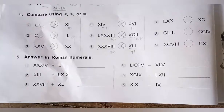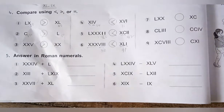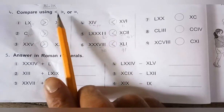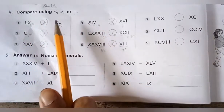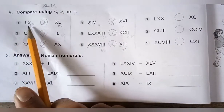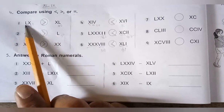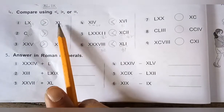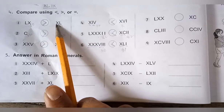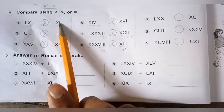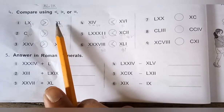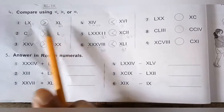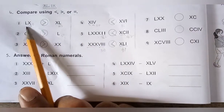For 152: C is 100, L is 50, and II is 2, so it is 100 plus 50 plus 2 equals 152. That is true. Now question number 4: compare using less than, greater than, or equal to symbols. LX: L is 50 and X is 10, so LX is 60. XL: X is to the left of L, so it is 50 minus 10 equals 40.